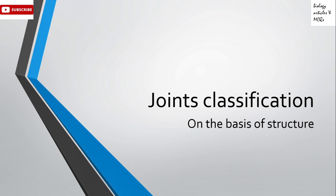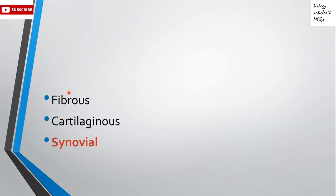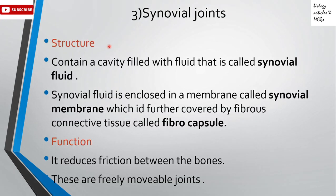Assalamu alaikum, guys, and welcome to my YouTube channel Biology Articles and MCQs. In the previous video, you studied about joint classification. We were studying joint classification on the basis of structure. You studied there are three types of joints: fibrous joints, cartilaginous joints, and synovial joints. In the previous videos you learned about fibrous and cartilaginous joints. Today's video is about the synovial joint.